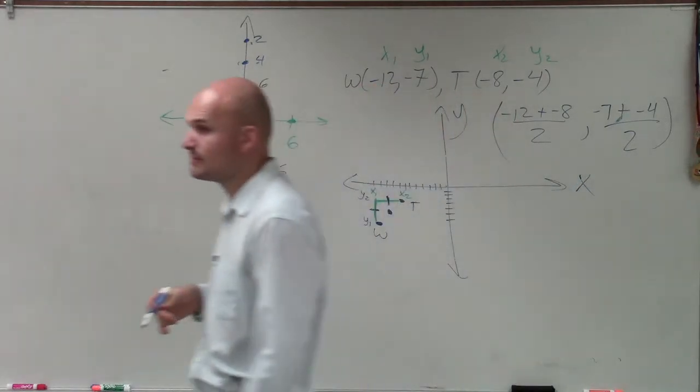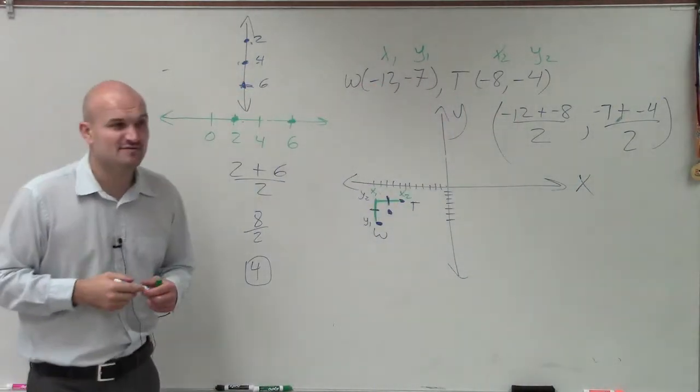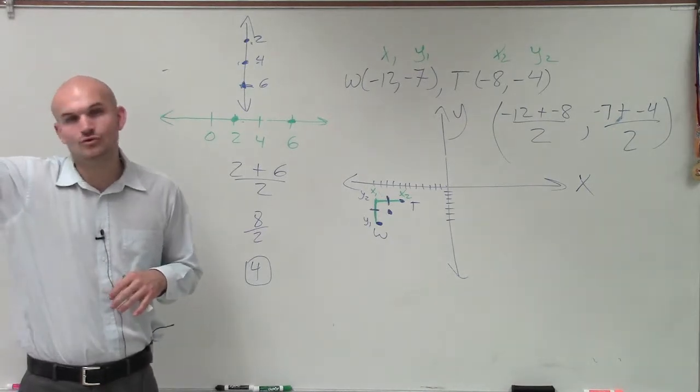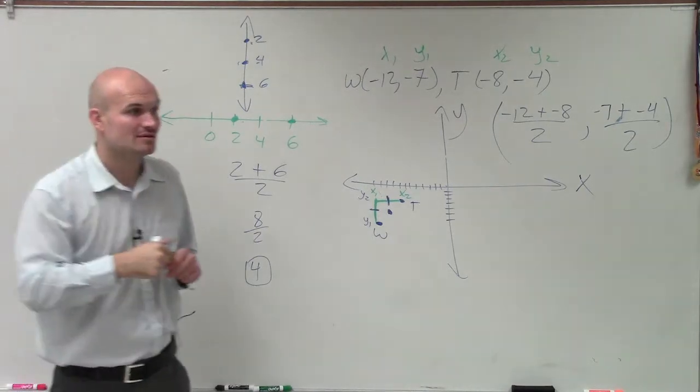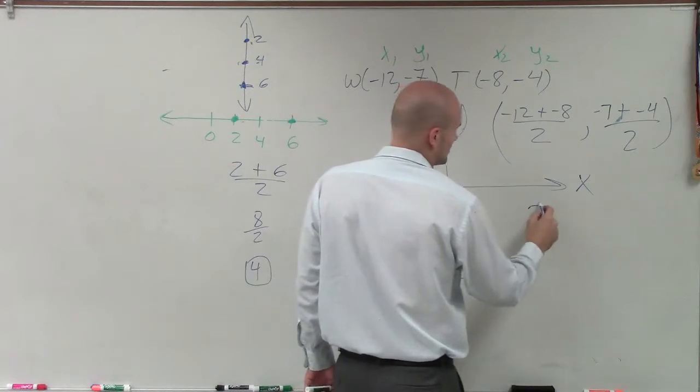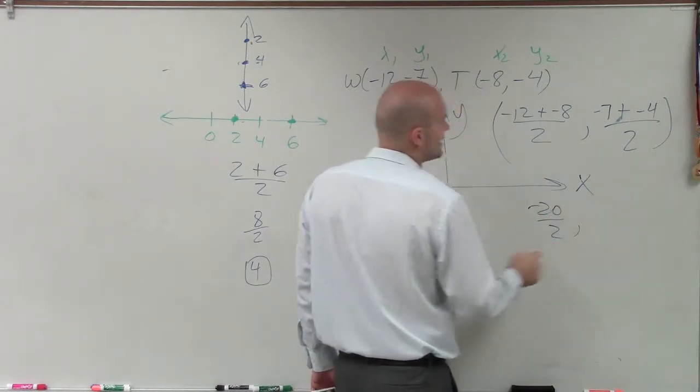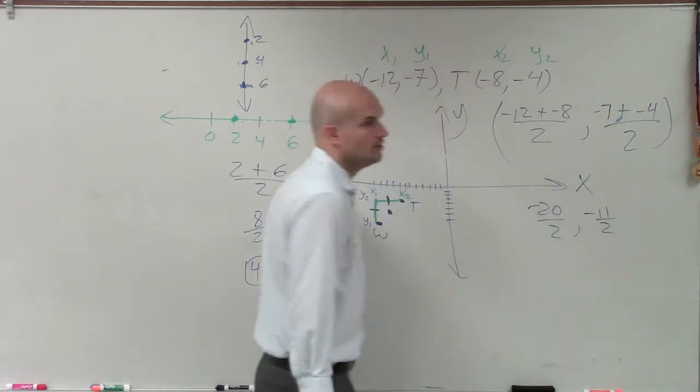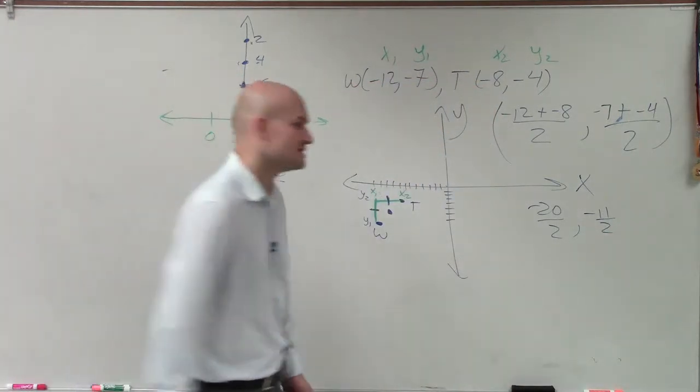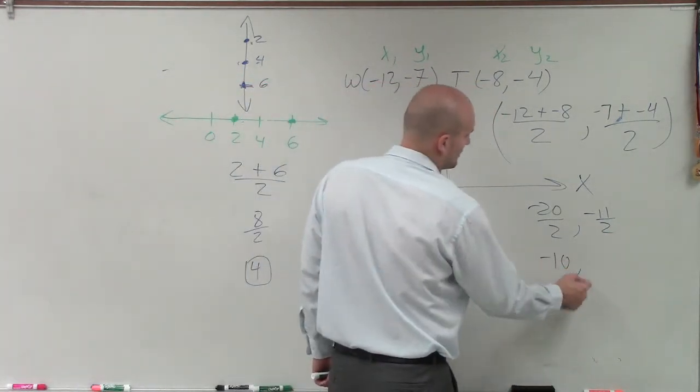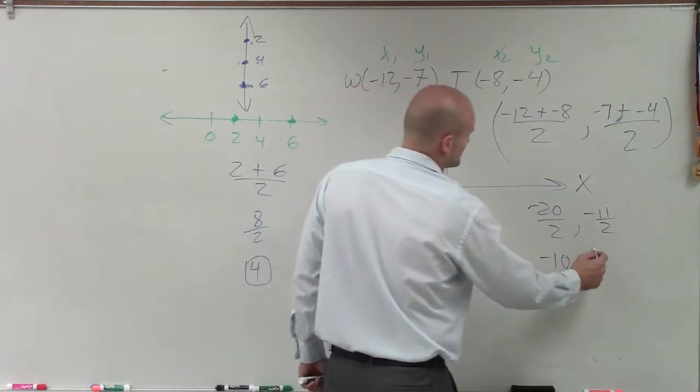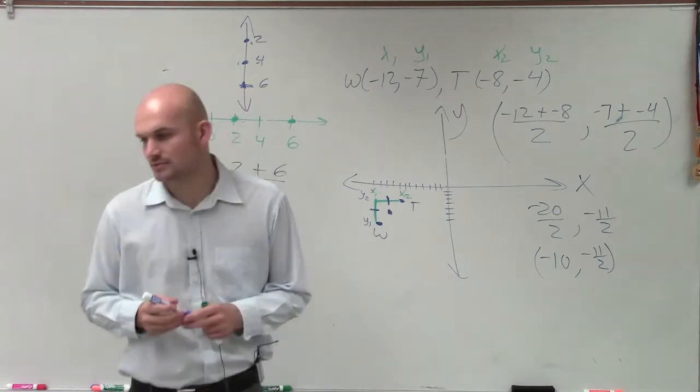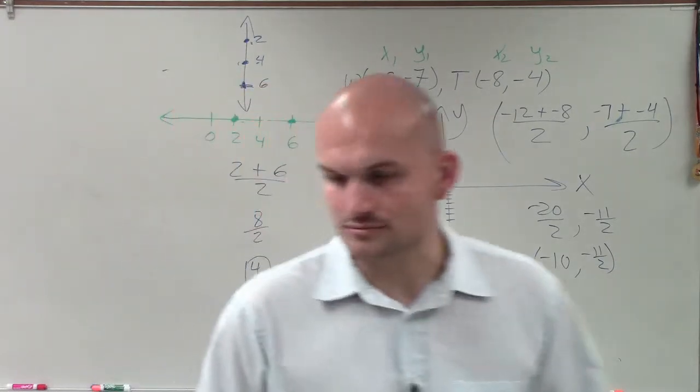So now I just need to determine, well, what is negative 12 plus negative 8? Anybody? Negative 20. And negative 7 plus negative 4 is negative 11 over 2. Well, negative 20 divided by 2 is negative 10. And negative 11 divided by 2 is just going to remain that same answer. So that is your final answer if you've got an M for that.